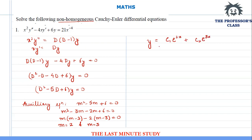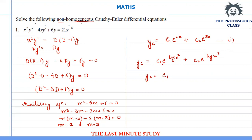On substituting the values, I will get y equals c1·e^(2z) plus c2·e^(3z). If I substitute z equals log x, I will get c1·e^(2 log x) plus c2·e^(3 log x). Since the exponential and log functions cancel each other, I will get yc equals c1·x² plus c2·x³. This is the first part.